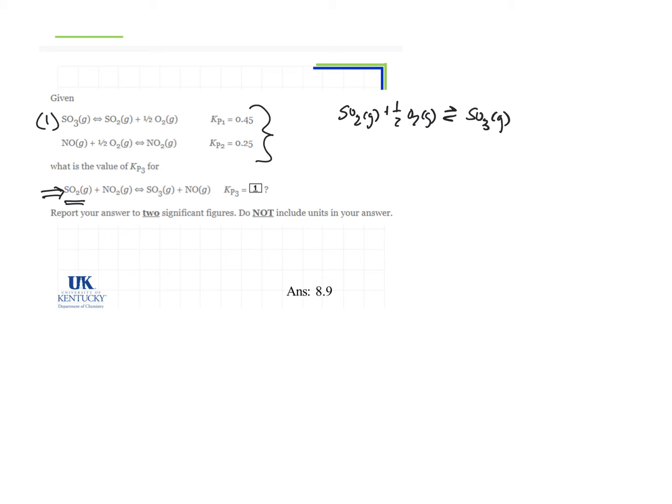Now when you reverse the reaction, you don't change the sign of Kp, you take the reciprocal. So the K of this reaction, and we'll call it K1, is going to be Kp1 prime. It's a new K.